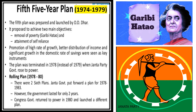Next, the Fifth Five-Year Plan, which ran from 1974 to 1979. The plan was prepared and launched by D.D. Dhar. It proposed to achieve two main objectives: removal of poverty — also called 'Garibi Hatao,' the famous slogan given by Indira Gandhi — and the attainment of self-reliance. Self-reliance meant being self-sufficient. Promotion of a high rate of growth, better distribution of income, and significant growth in the domestic rate of savings were key instruments. The plan was terminated in 1978, before its scheduled end in 1979, when the Janata Party government rose to power.